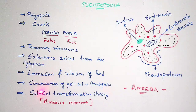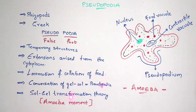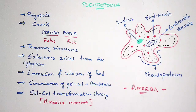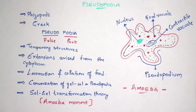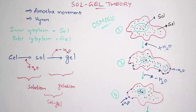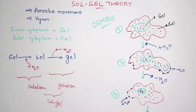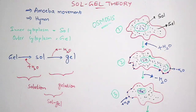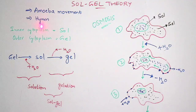Conversion of gel and sol takes place with the help of Pseudopodia. This can be explained by the sol-gel theory, also called the sol and gel transformation theory, which explains amoeba movement. The sol-gel theory was first proposed by Hyman. This theory can be explained through amoeba movement. This is one of the most important topics which will be asked in your entrance examination or intermediate zoology IP examinations.